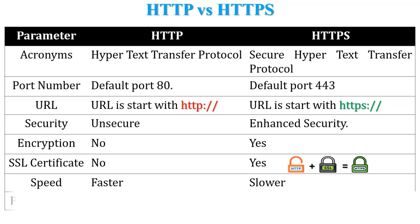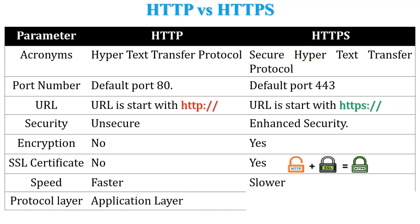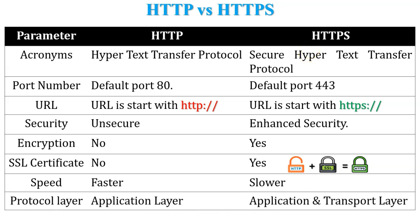The next parameter is protocol layer. HTTP is an application layer protocol. HTTPS operates at both the application layer and the transport layer, because HTTPS is a combination of HTTP and SSL, where HTTP is an application layer protocol and SSL is a transport layer protocol.